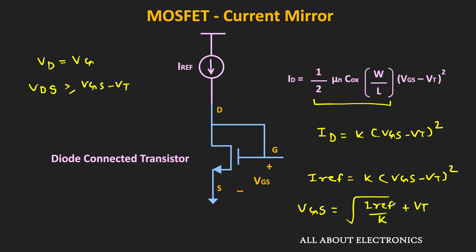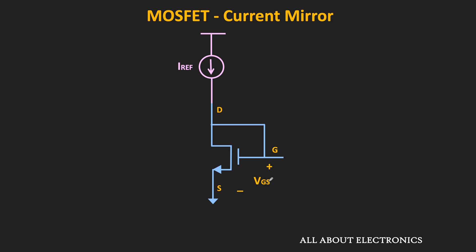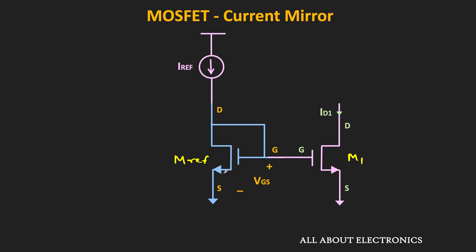So depending on this reference current, this voltage VGS will change. The same voltage VGS can be applied between the gate and the source terminal of this MOSFET. Let's call this the reference MOSFET and this one M1. If these two MOSFETs are perfectly matched — in other words, if the device parameters of these two MOSFETs are identical — then for the same voltage VGS, M1 should also generate a drain current equal to the reference current. The only thing we need to ensure is that M1 remains always in saturation so that it can be used as a current source.